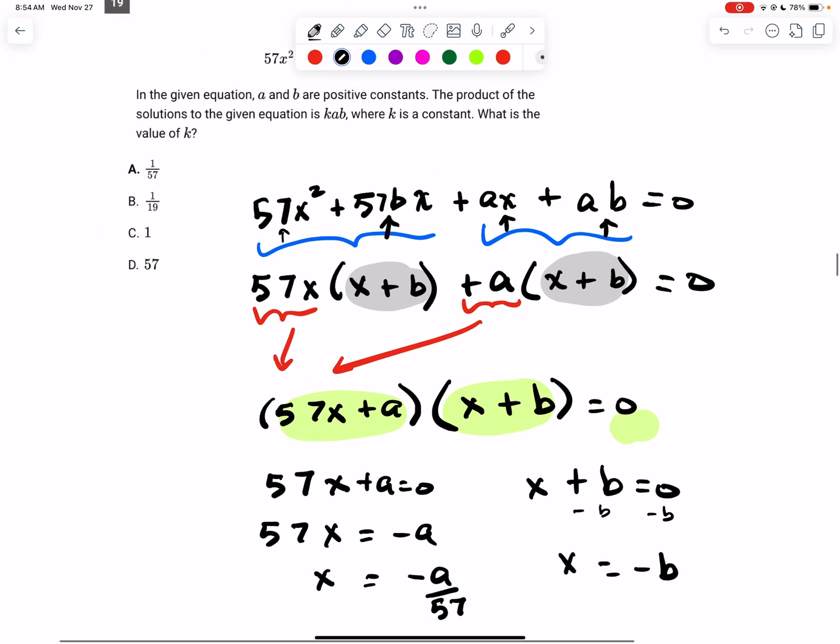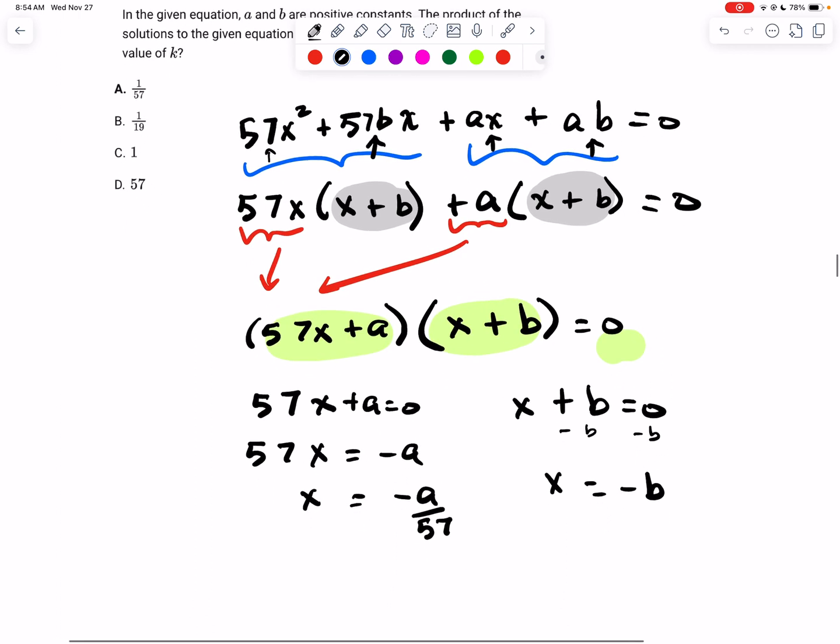All right, so going back to the original question, it says that the product of the solutions is kab. So this is the key thing here. The product of the solutions is kab. Well, this is one solution, and this is the other solution.